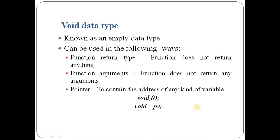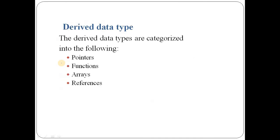The next data type is void, known as an empty data type. We can see the implementation of void as a function return type, function arguments may also be void, and we can use void pointers which can point to any kind of data. Void is useful when a function does not return anything and when a function does not take any argument. Enumeration has already been studied in C language, so we are not covering it here. We will see the derived data types in the next subsequent lecture series.